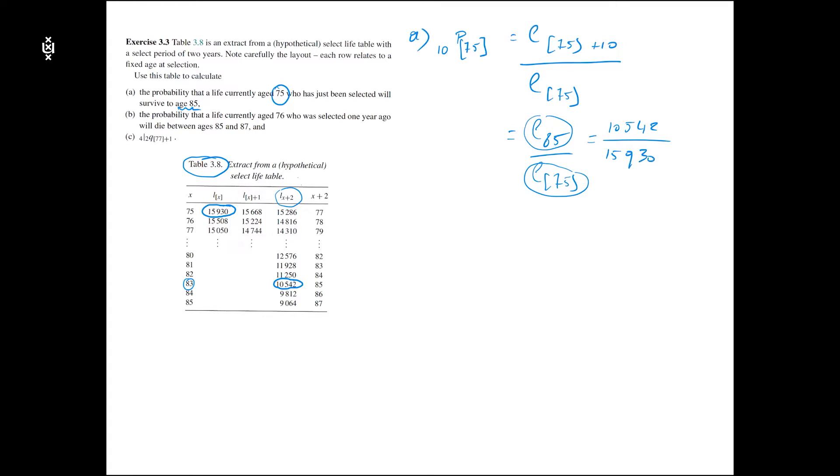If you do the calculations you find that this is equal to 0.66. For question B we are looking for another probability, for someone who is now 76 and who was selected one year ago, so selected at age 75 and now aged 76. This person has to die between 85 and 86.